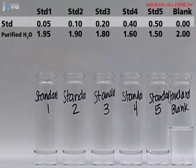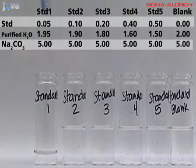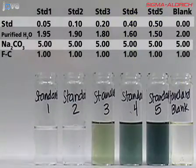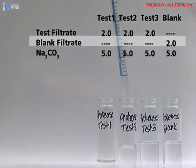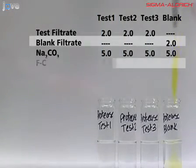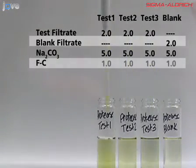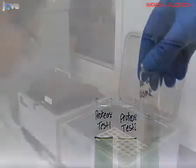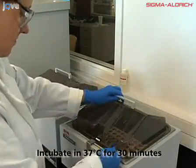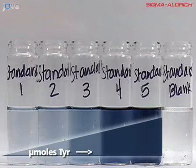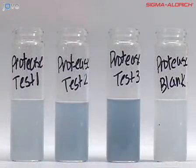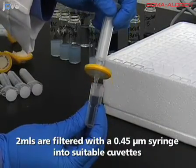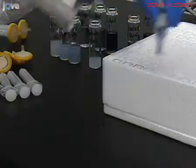To all of the vials containing the standards and standard blank, five milliliters of sodium carbonate is added, and for best results, the Folin's reagent is added immediately afterwards. Sodium carbonate is then added to our test samples and test blank. You'll notice that these solutions become cloudy after the addition of sodium carbonate. Then the Folin's reagent is added, which will react with free tyrosine. The DRAM vials are then mixed by swirling and incubated at 37 degrees Celsius for 30 minutes. After this incubation, you should notice that the standards have a gradation of color correlating with the amount of tyrosine added, the highest concentrations of tyrosine appearing darkest. You can also notice appreciable color change in our test samples. Two milliliters of these solutions are filtered using a 0.45 micron syringe filter into suitable cuvettes. Now that we've finished our assay, let's proceed to the spectrophotometer and record our absorbance values.